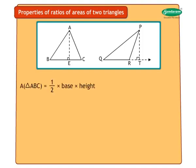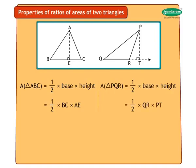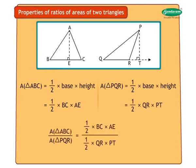Area of triangle ABC is equal to half into base into height, which equals half into BC into AE. Area of triangle PQR is equal to half into base into height, which equals half into QR into PT. Therefore, area of triangle ABC upon area of triangle PQR is equal to BC into AE upon QR into PT.